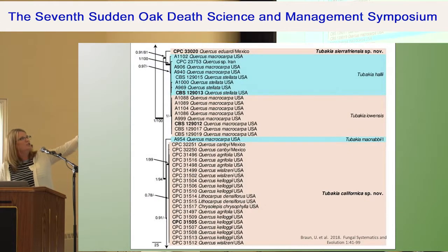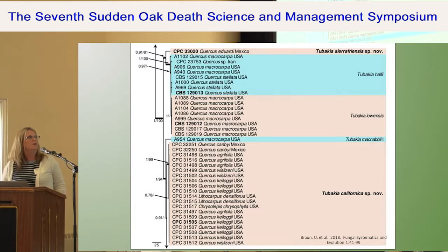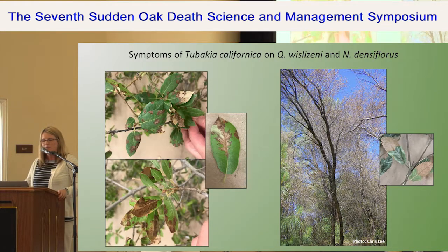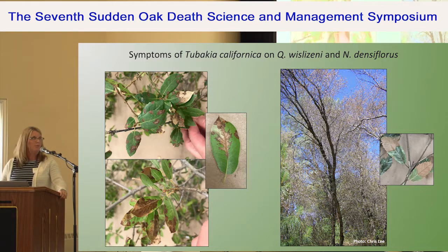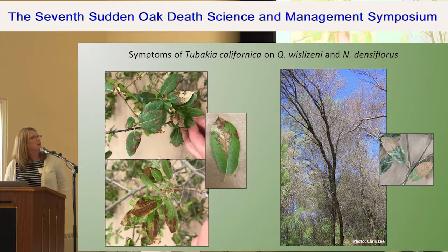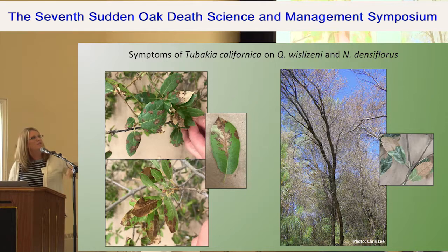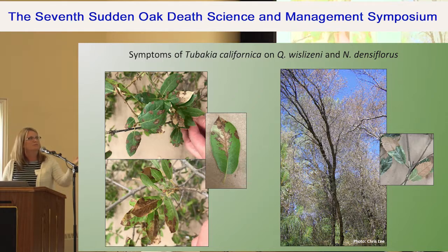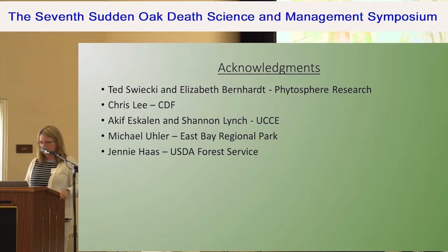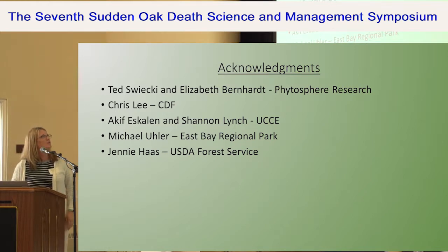This new fungus, which we call Tubakia californica, is very closely related to Tubakia iowensis, which causes bur oak blight in Iowa. It has also been found on Chinkapin and Quercus chrysolepis, causing dramatic symptoms with necrosis running along the veins. Chris Lee has also seen it on tan oak up north causing dieback and foliar symptoms. Those were all the diseases I wanted to talk about. I'd like to acknowledge the following people for supplying their photos. Thank you.